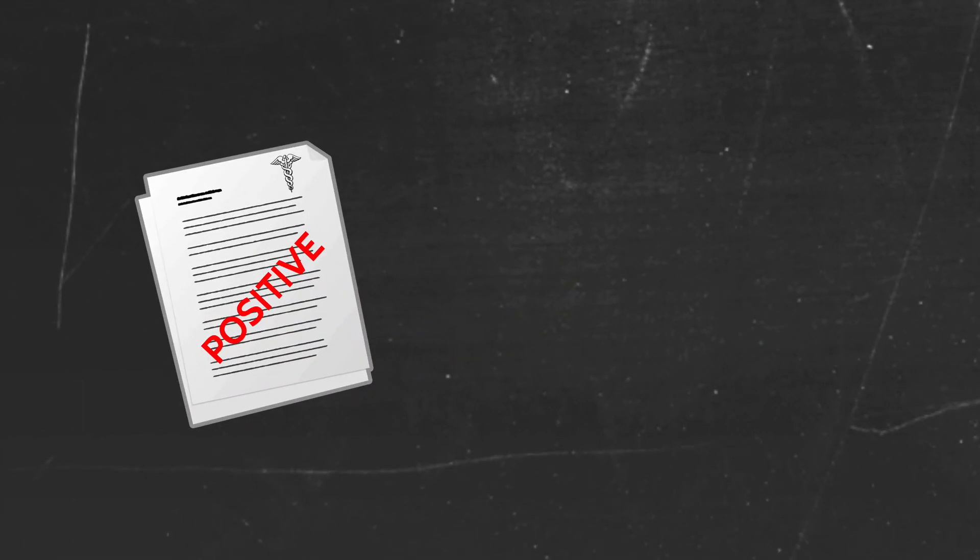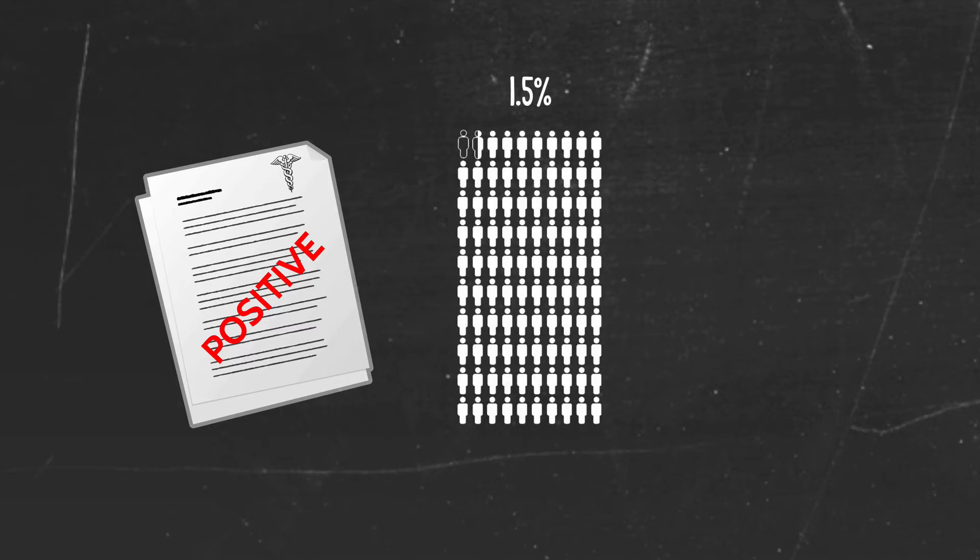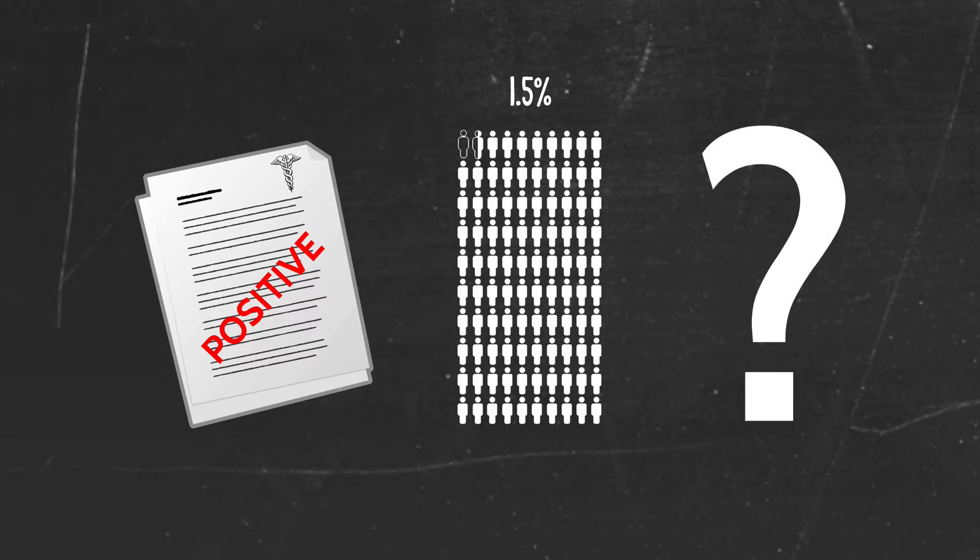So let's imagine that the results of your test come back and they're positive. Just think about that for a minute. What does this really mean? Given that I've got a positive test result, how likely is it that I really have the disease? That's the big question. Before you received the positive test result, we would say your likelihood of having the disease was about 1.5% or roughly 1 in 70. So given this new evidence in the form of a positive test result, what do you think your likelihood of having the disease is now?